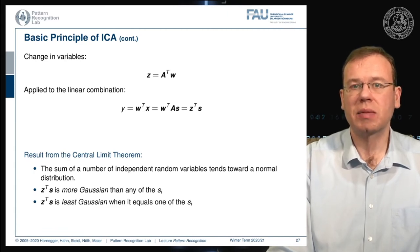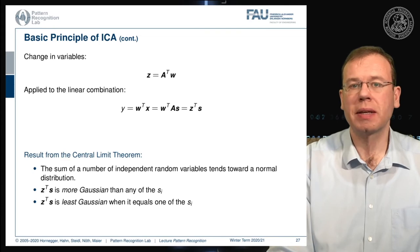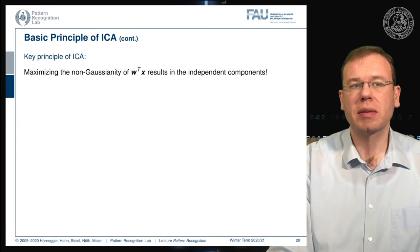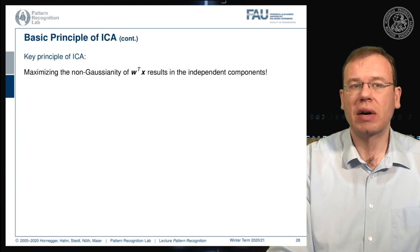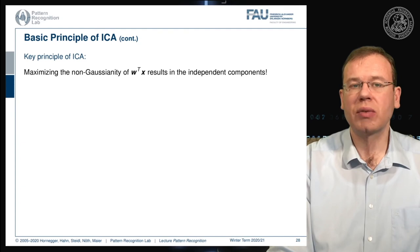z-transpose s is least Gaussian when it equals one of the independent components si. This leads us to the key principle of independent component analysis: we maximize the non-Gaussianity of w-transpose x, and this will then yield the independent components.